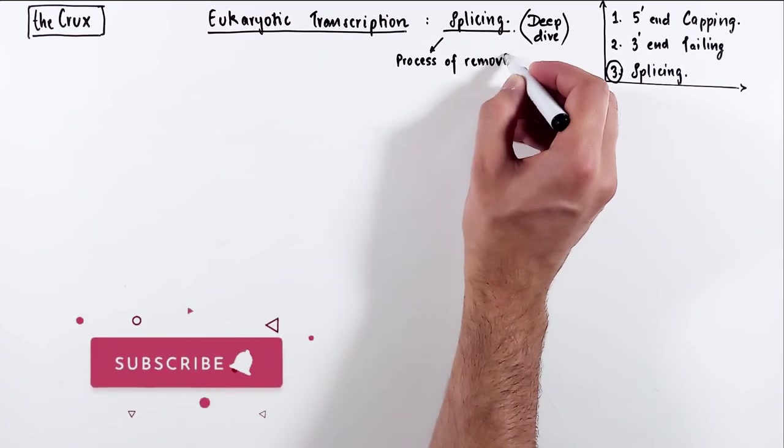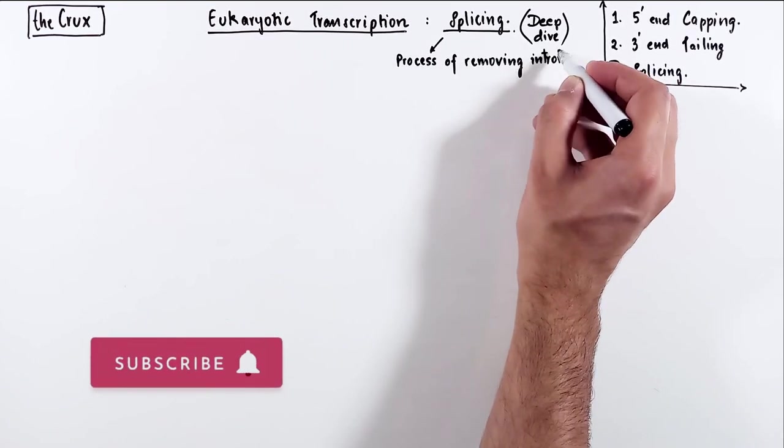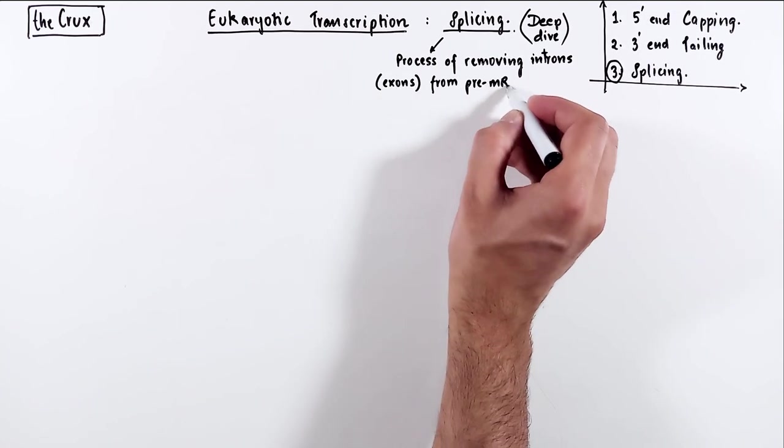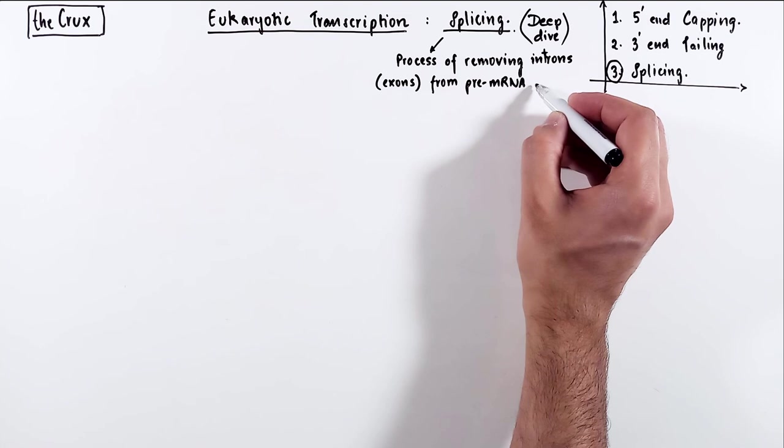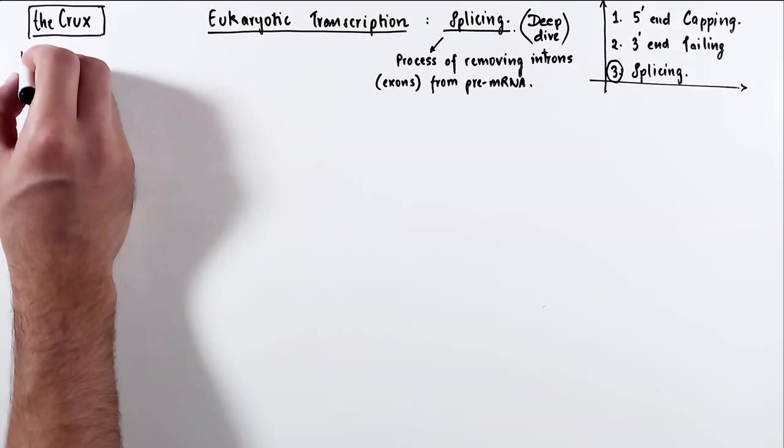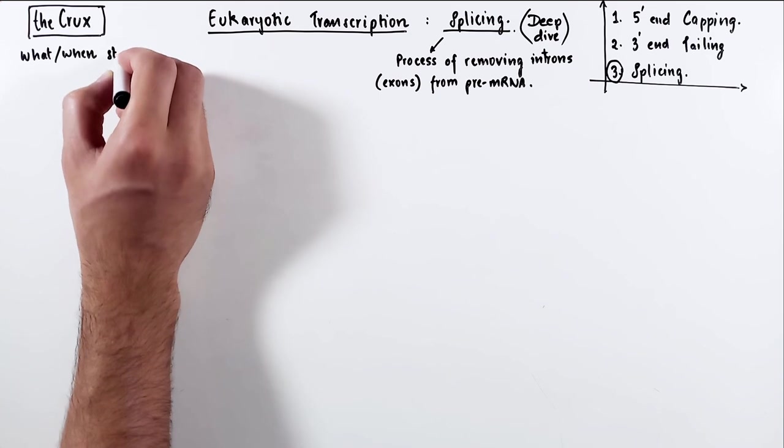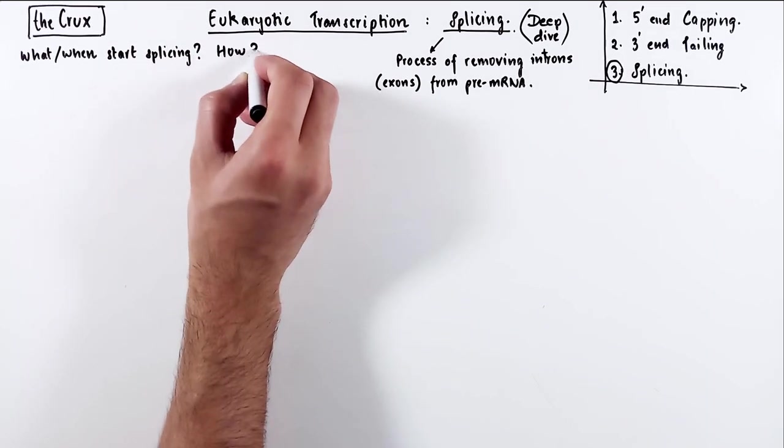Let's start by giving a very general definition of splicing. It is a process of removing introns, and in some cases even exons, from the pre-mRNA during or after transcription. I am going to split the content of this video into three parts, where we will see what and when splicing starts, how it is done,